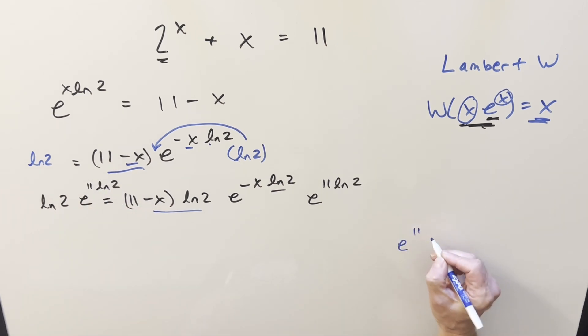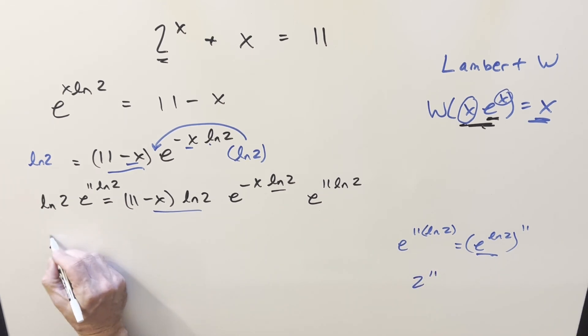Now for e to the ln 2, just kind of doing what we did earlier in reverse, I can write this as e to the ln 2 all to the 11, but this is just 2. So I can write this, put this back as 2 to the 11. So on the left side, when I rewrite this, I'll write it ln 2, but this I'm going to put in this form. So we'll have this as 2 to the 11.